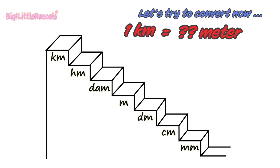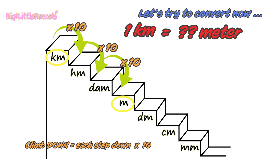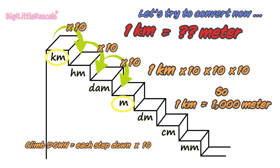Let's try to convert now. One kilometer equals to how many meters? First, find where is the kilometer — there it is. Then find the meter. You need to jump down from kilometer to meter. Remember the formula: as you are climbing down, each step you jump down, you need to multiply by 10. One, two, and three jumps. So one kilometer multiplied by 10, by 10, and by 10 — one kilometer equals to 1,000 meters.